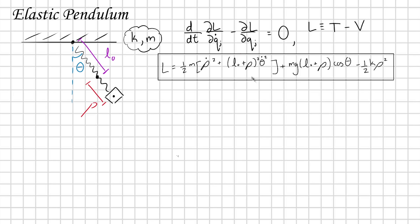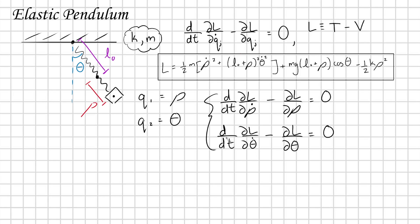Once you have your Lagrangian, you plug it straight into the Euler-Lagrange equations, and that will give us our equations of motion for theta and rho. Because we have two coordinates — rho and theta — we're going to be writing out two Euler-Lagrange equations, where q1 equals rho and q2 equals theta.